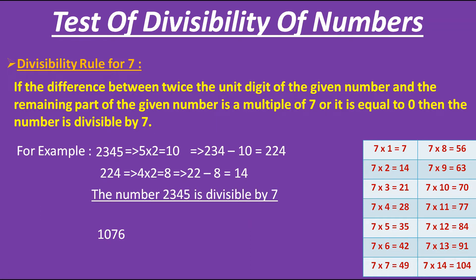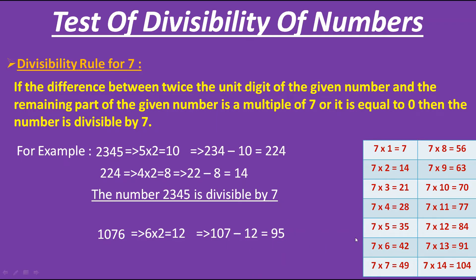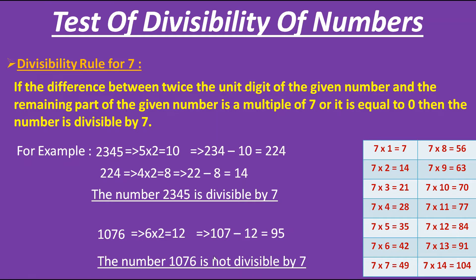Now let's apply this rule to the next number, which is 1076. We double the unit digit 6: 6 × 2 = 12. We subtract 12 from the remaining part 107: 107 − 12 = 95. Let's check whether 95 is a multiple of 7. No — we have 91 but not 95. Therefore, the number 1076 is not divisible by 7.